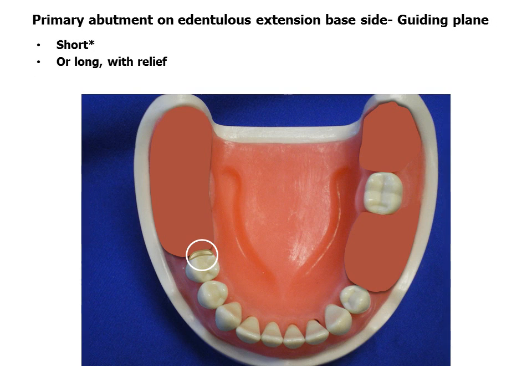The guiding plane on the extension base side is short, about one-third the occlusal gingival height. In cases where a long guide plane exists, the proximal plate of the cast framework may be adjusted to provide relief in the gingival area.